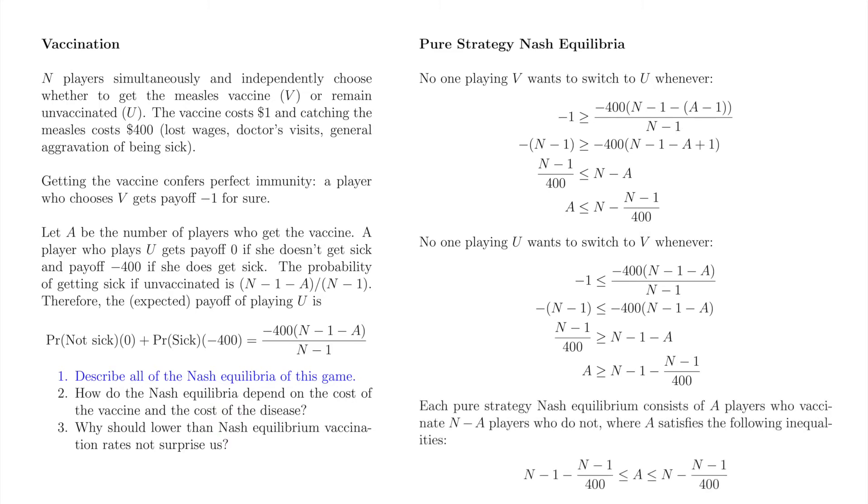Combining these inequalities, a pure strategy Nash equilibrium consists of A players who vaccinate, and the balance N minus A who do not, where A sits in the range shown. There are many pure strategy Nash equilibria in this game. We don't need to state them individually. We just need to describe the number of vaccinators in Nash equilibrium. If N equals 2, that is to say that in pure strategy Nash equilibrium, one player vaccinates while the other does not.